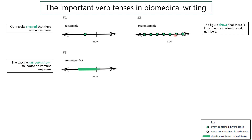Our next most common verb tense is the present perfect. Our example sentence: 'The vaccine has been shown to induce an immune response.' This is something that has been true in the past, over some length of time, and is likely to continue into the future, although it's not guaranteed. In daily life, I might say, 'I have been an English teacher for 15 years.' These three are the most important.